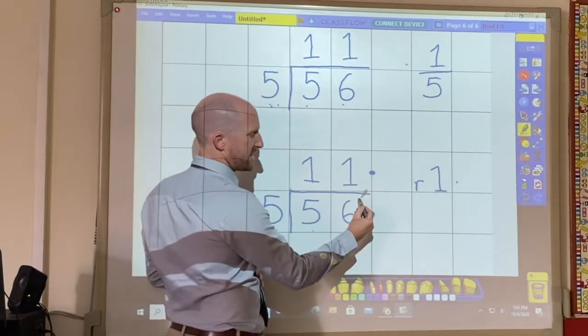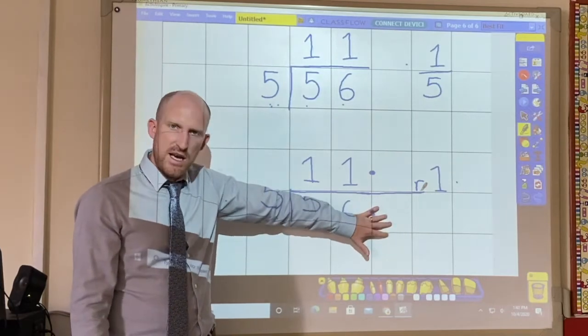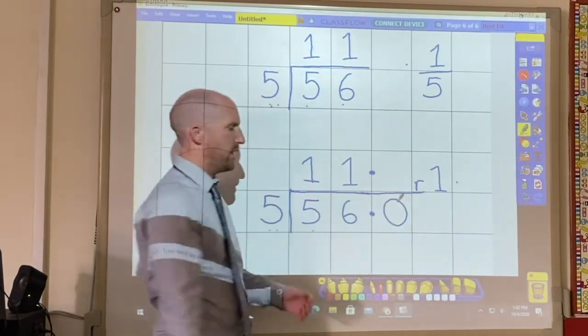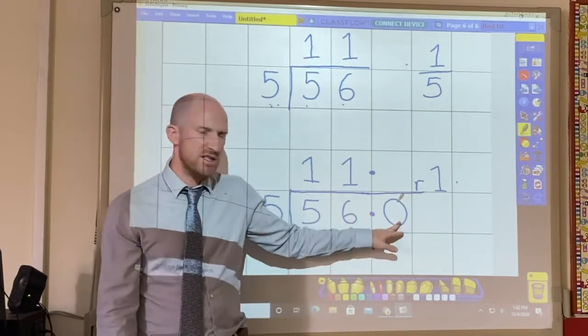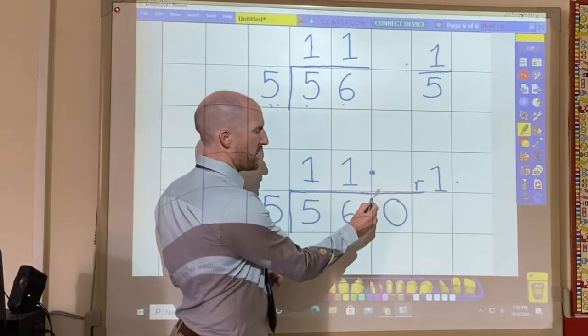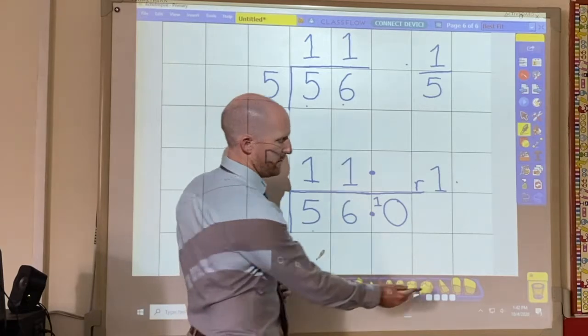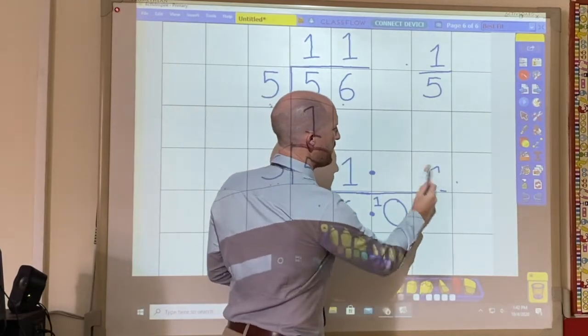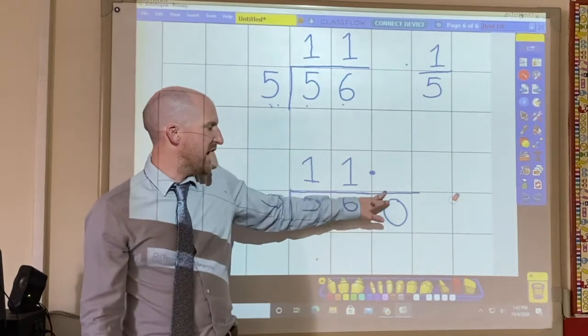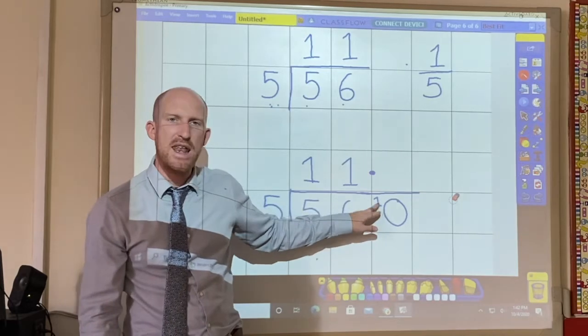And I'm going to need to extend the line. Every single time you put a 0 after the decimal point. And the remainder then goes next to the 0. So can you see how I have taken the remainder and added it to a 0? So this number is actually 10 now.